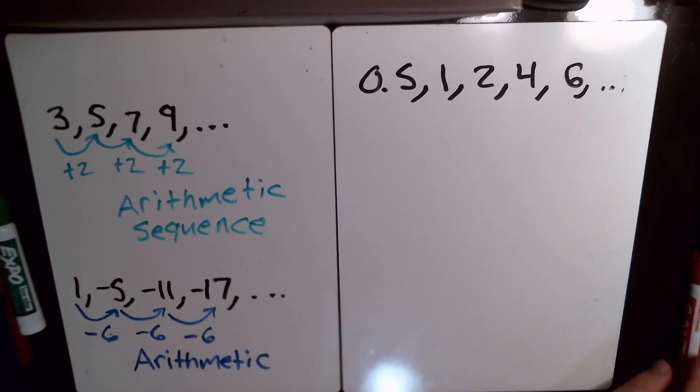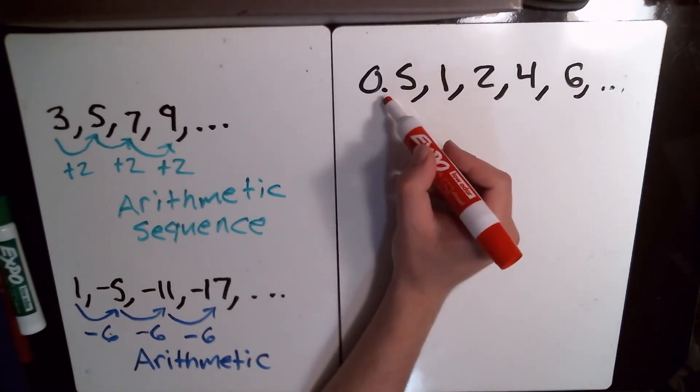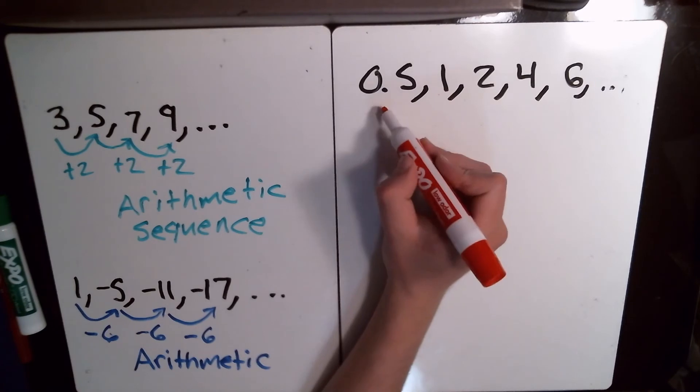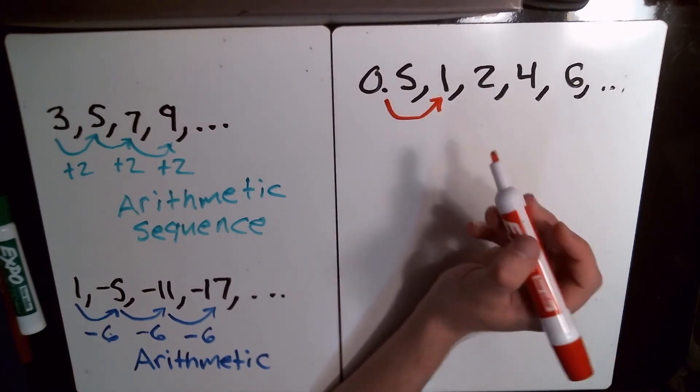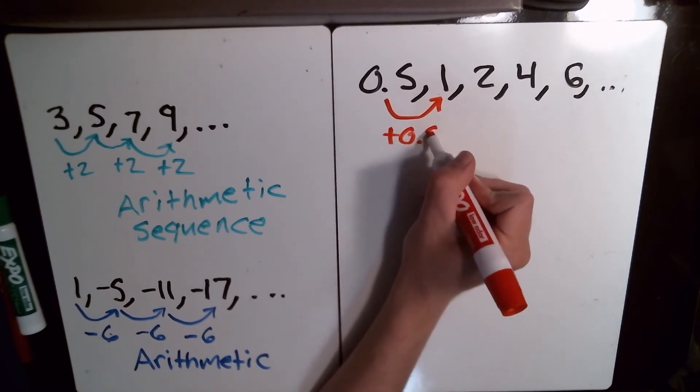Okay, so last one. Let's look at this one up here on the right. We start at a half and we go to 1. So what's the difference here? To go from one half to 1, we're going to add one half.